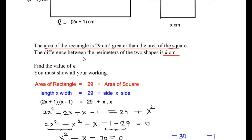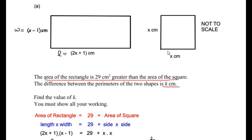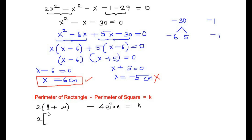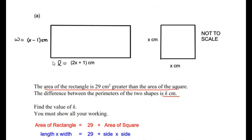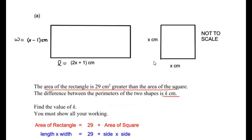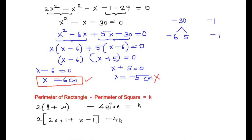The second statement says the difference between the perimeters of the two shapes is k cm. The perimeter of a rectangle is 2 times (length plus width), and the perimeter of a square is 4 times side. So: 2(2x plus 1 plus x minus 1) minus 4x equals k, substituting the length as 2x plus 1, width as x minus 1, and side of square as x.